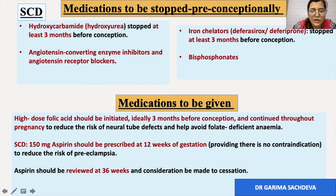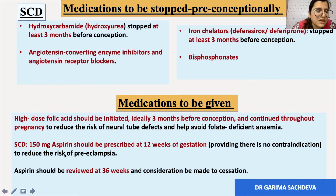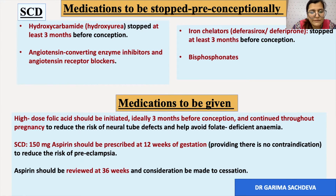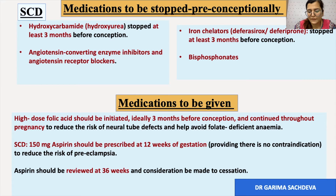Medications to give include high-dose folic acid — 5 mg — in sickle cell disease, ideally three months before conception and continued throughout pregnancy. In sickle cell disease, 150 mg of aspirin should be given from 12 weeks of gestation, and patients should be reviewed at 36 weeks to stop it.